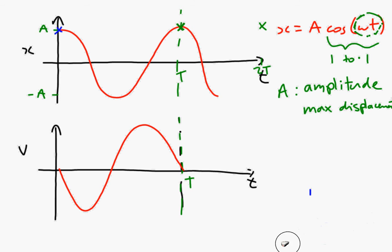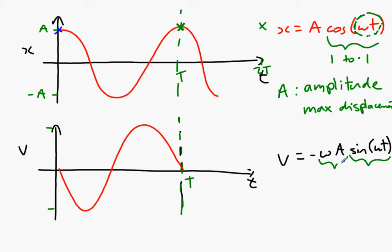The formula is v equals minus omega A sine(ωt). Since sine varies between minus one and one, the amplitude of the velocity graph is omega A. So the maximum value is plus omega A and the minimum is minus omega A, and it repeats every period T, just like the displacement graph. You need to know that v_max, the maximum velocity, is omega A.